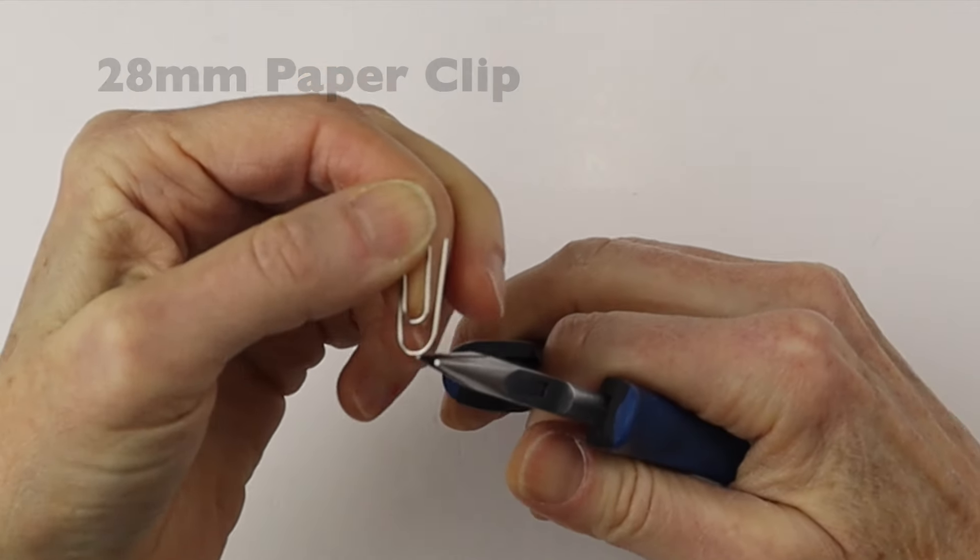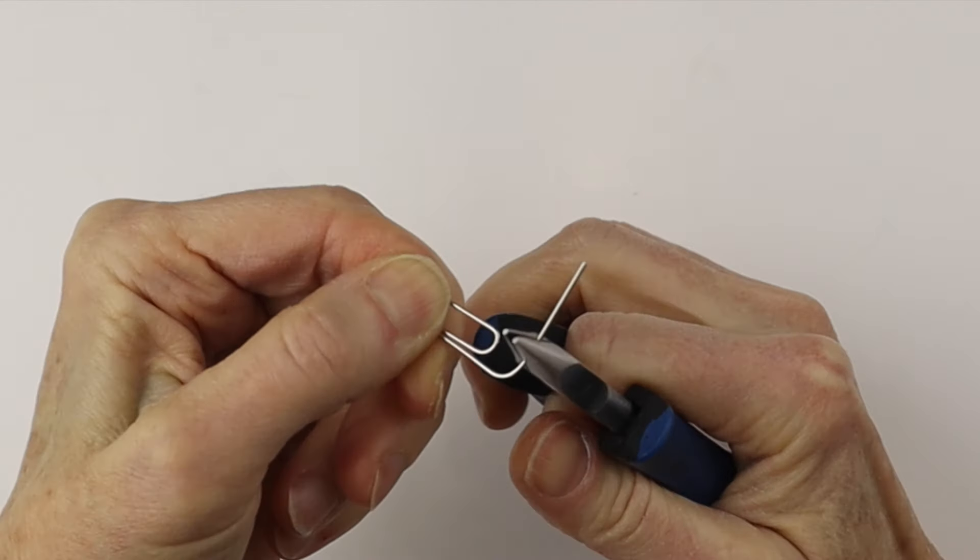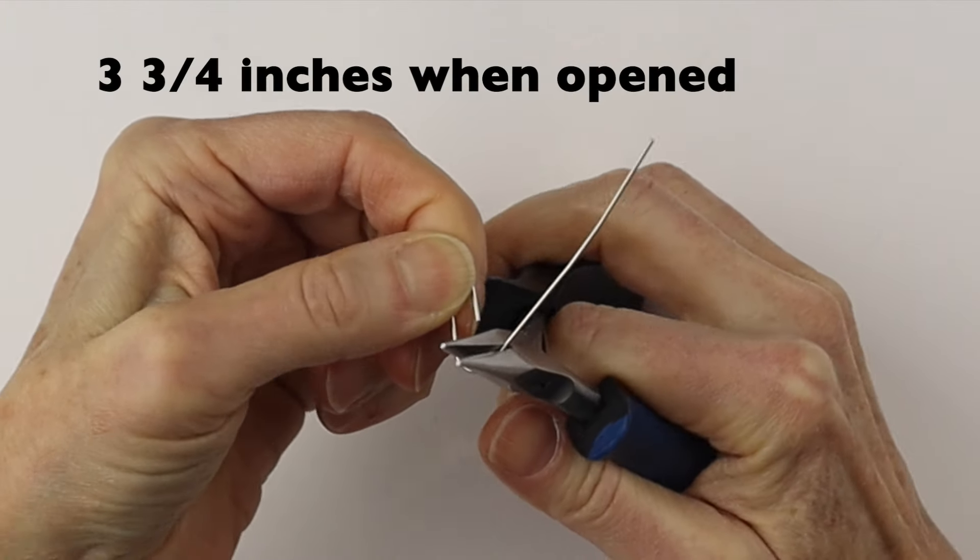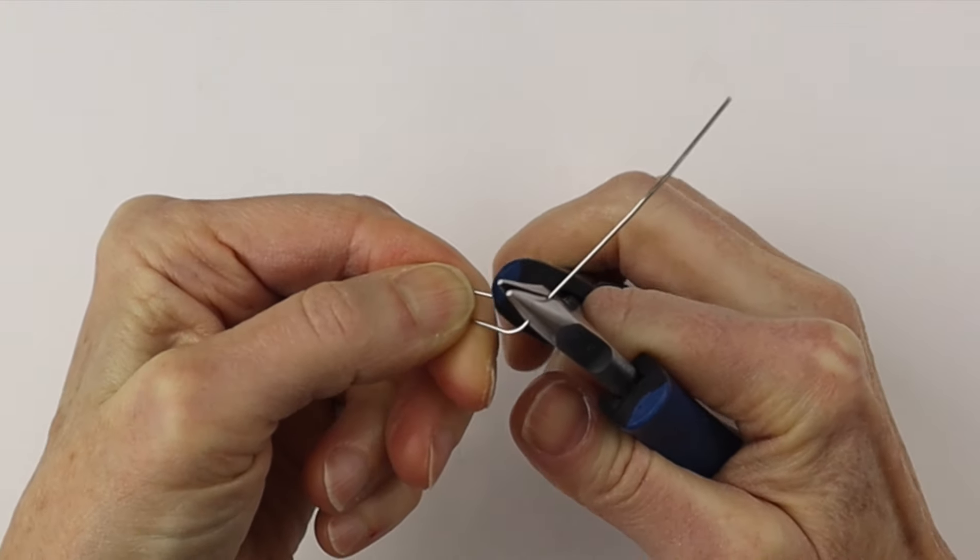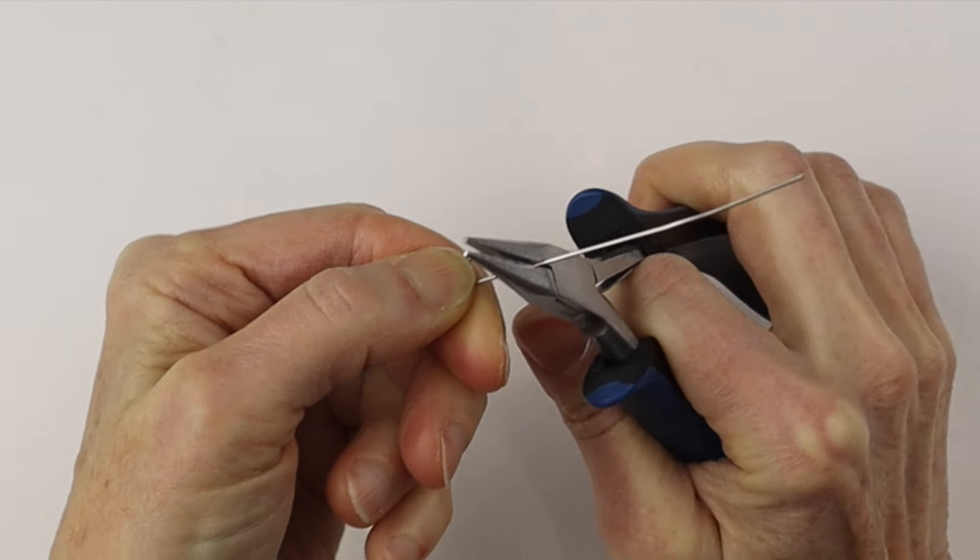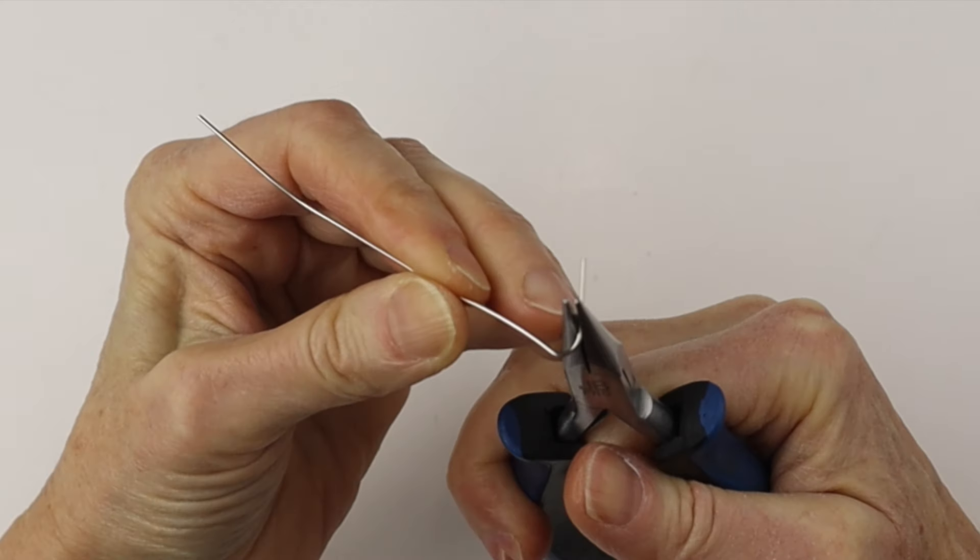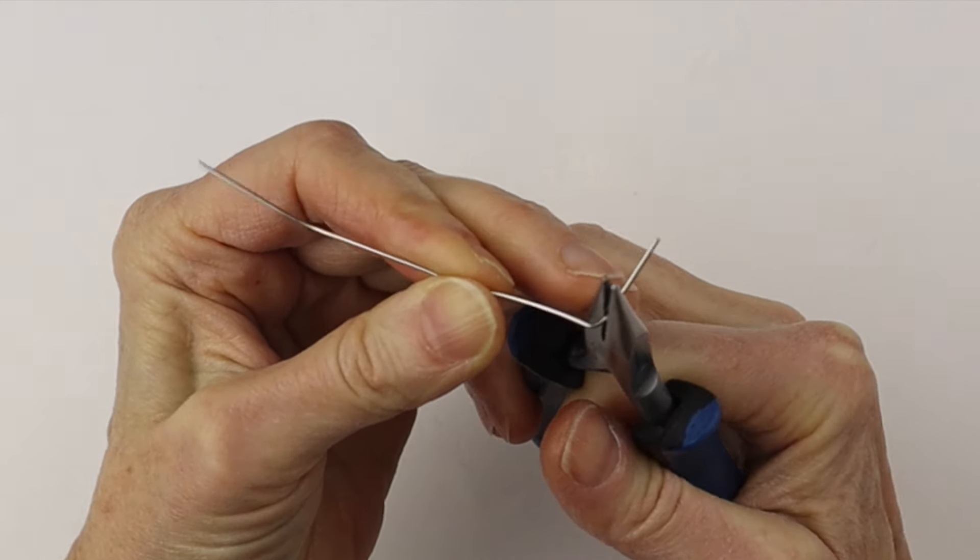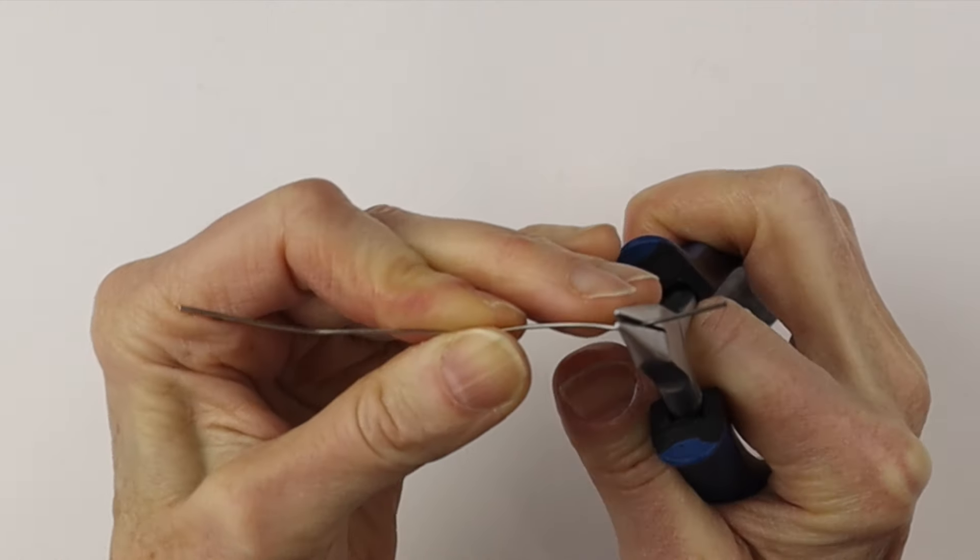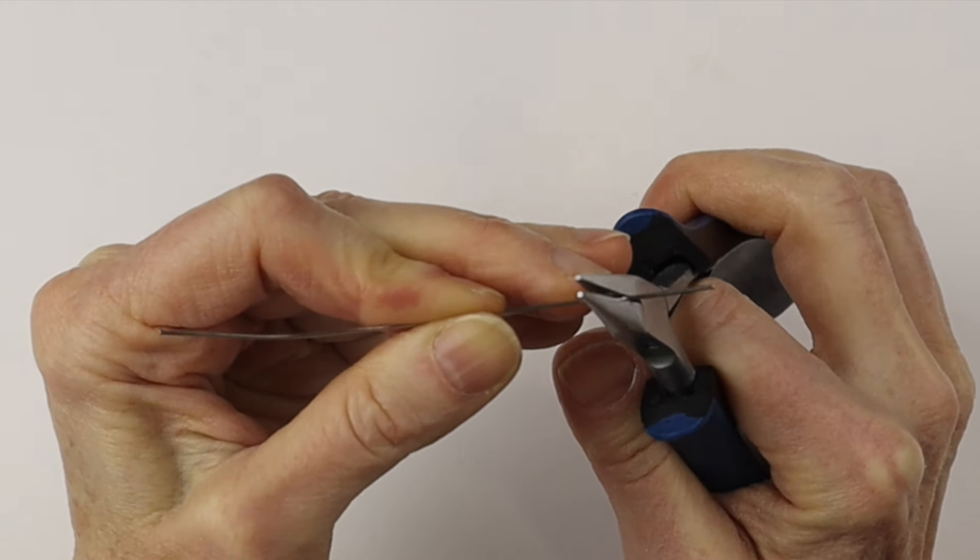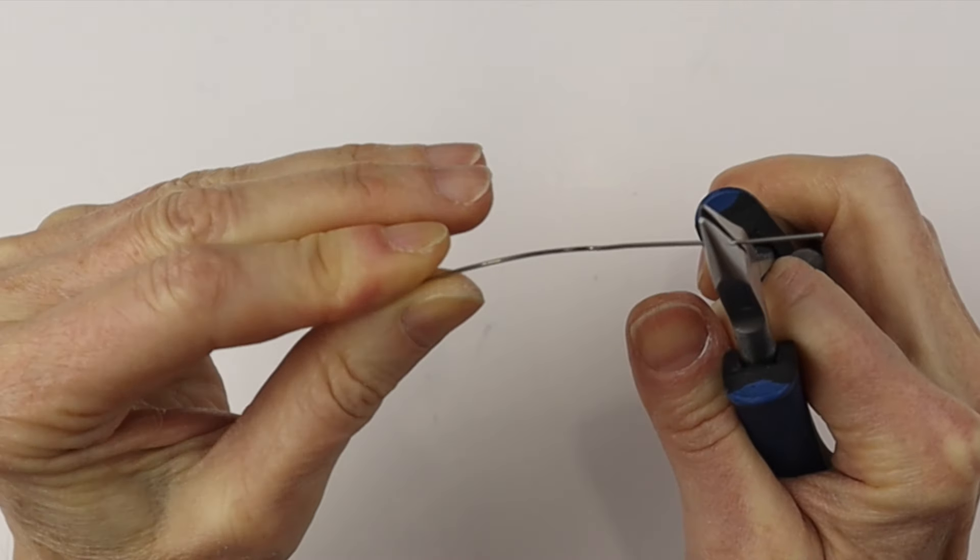So we're going to start with a paper clip. These are standard sized paper clips that open up to three and three quarter inches long. We're just going to go slowly with our flat pliers and open them up to make a straight piece of wire. This is equivalent to about 20 gauges of wire, so you can use wire if you don't have paper clips.